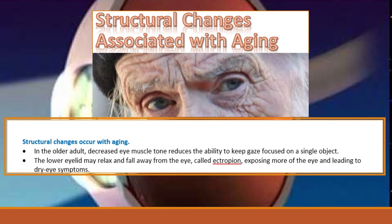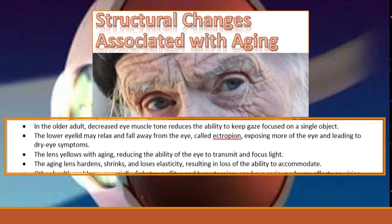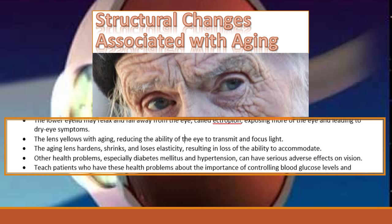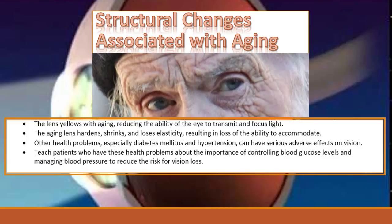Let us now do a quick overview of some structural changes associated with aging to the eye. In the older adult there's a decreased eye muscle tone that reduces the ability to keep gaze focused on a single object. The lower eyelid may relax and fall away from the eye, causing a condition called ectropion, exposing more of the eye and leading to dry eye symptoms. The lens may yellow with aging, reducing the ability to transmit and focus light. The aging lens may also harden, shrink, and lose elasticity, resulting in the loss of the ability to accommodate.